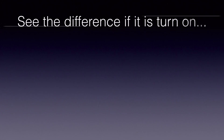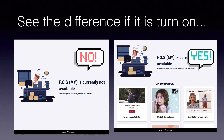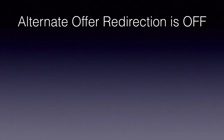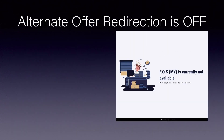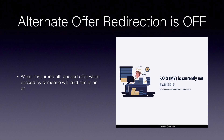See the difference if it's turned on. When alternate offer redirection is off and it is turned off, a paused offer when clicked by someone will lead them to an error or unavailable page.